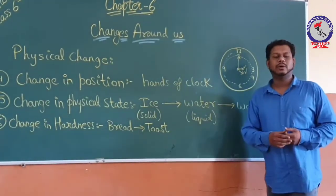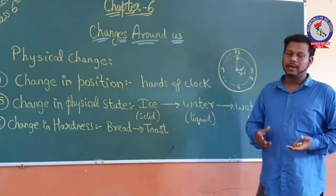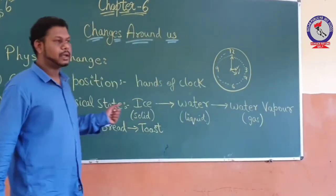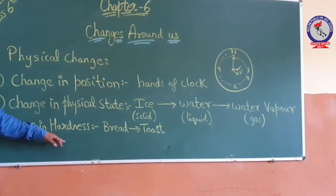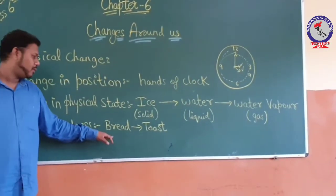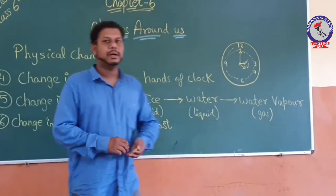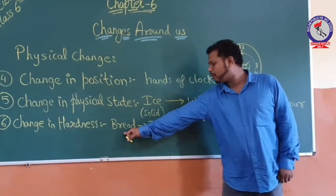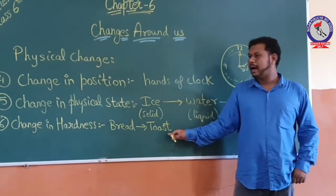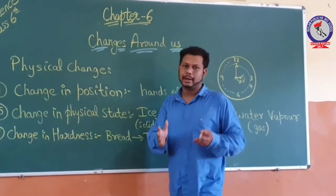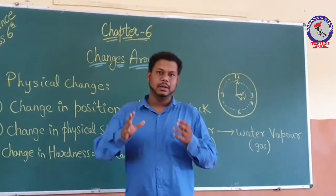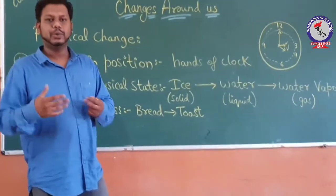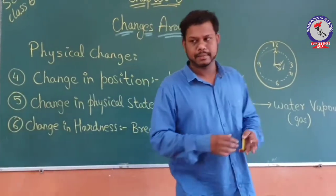Another example is change in hardness. Some objects are hard and some are soft. Taking the example of bread — bread is generally soft, but when we toast it, it changes from soft to hard. Another example: batter is soft, and when we bake it, it converts into a cake, and the cake becomes hard.